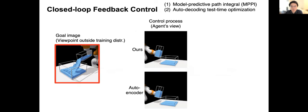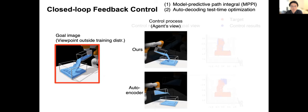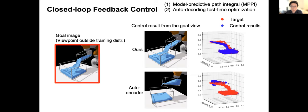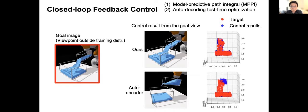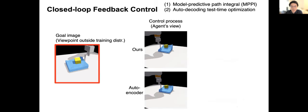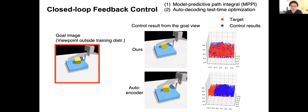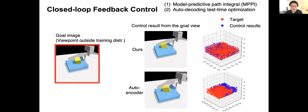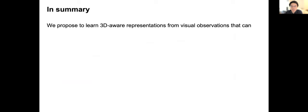Here we show the closed-loop feedback control results using our learned model. It can achieve the target configuration shown in the left image. Our model consistently outperforms a baseline that's trained by our multi-view data using time contrastive learning, showing the power of the spatial equivariance encoded in our model. Note that both methods use sampling-based model predictive control algorithms named MPPI to get feedbacks from the environment and derive the control signals. We also use auto-decoding test time optimization mechanisms to allow our model generalize to viewpoints outside the training distribution.